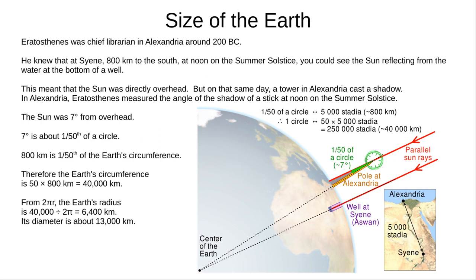There would be no shadow in Syene. He knew that. But at Alexandria, the sun was about seven degrees from vertical. Eratosthenes assumed that the earth was a perfect sphere and the sun's rays were parallel, which is pretty close to true. That meant that Alexandria was seven degrees north of Syene. That's about one-fiftieth of a 360 degree circle.